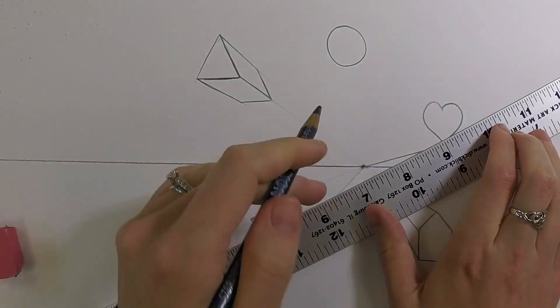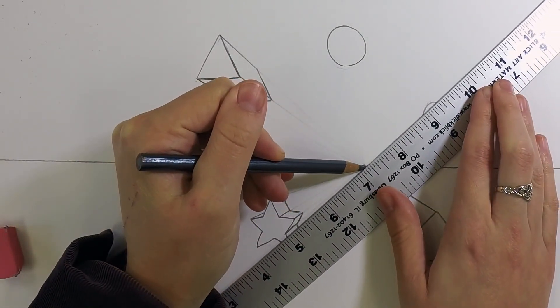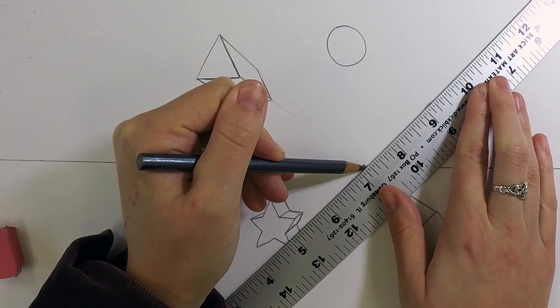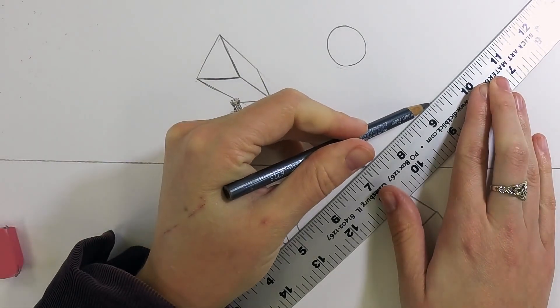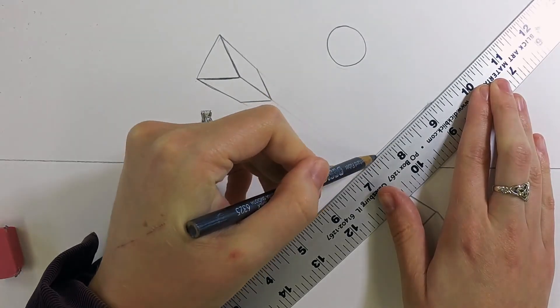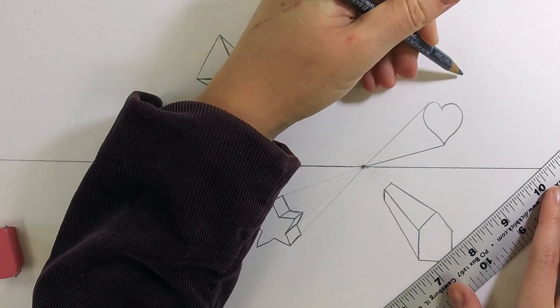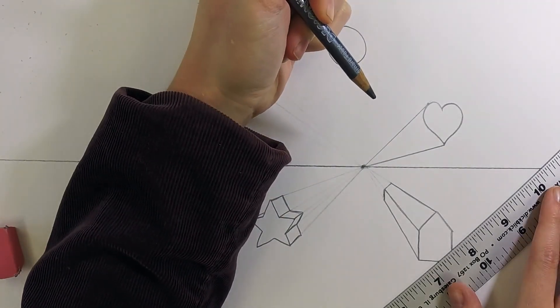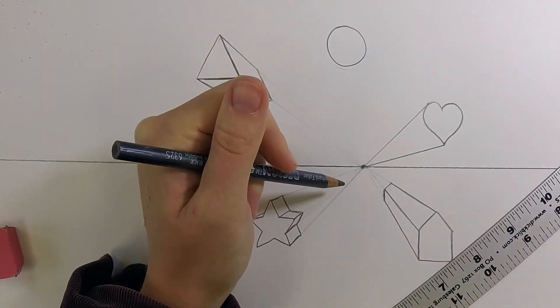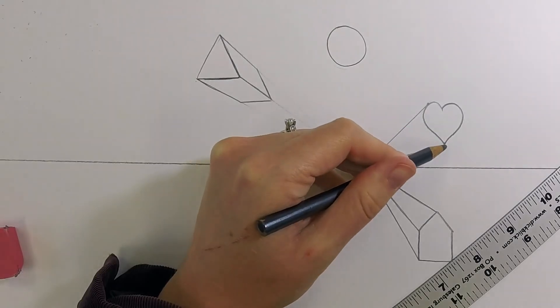So what we're going to do is we're going to line up our ruler with the vanishing point, we're just going to slide it until we hit the last bit of the shape with the ruler. So right at that edge. And then we're just going to draw a line right past it. So you don't want to be going through the shape at all, because that wouldn't be an edge. So it's just right on the lip of that curve.